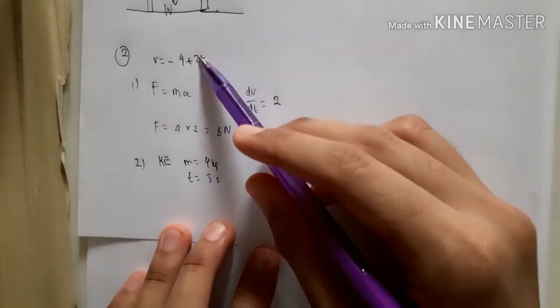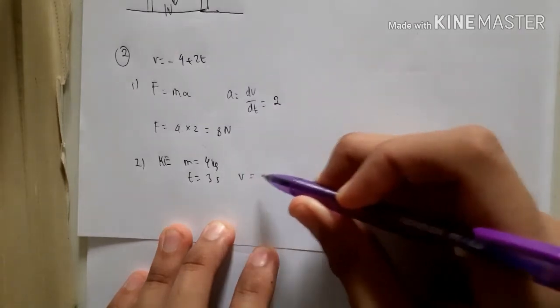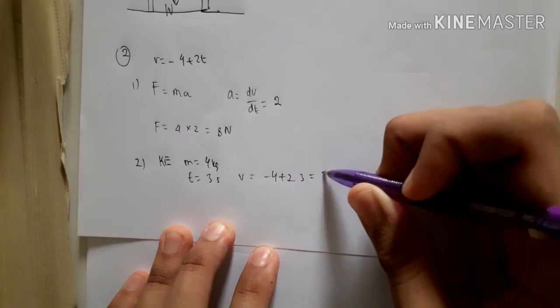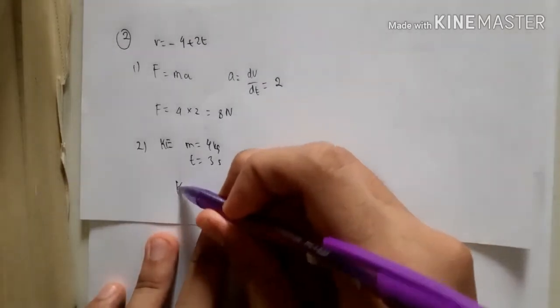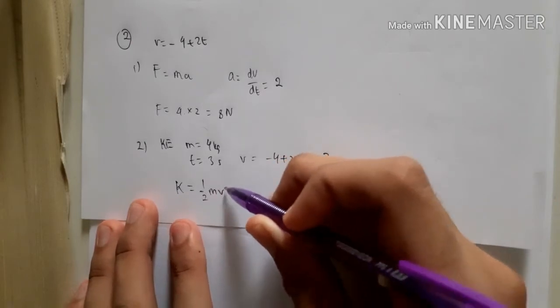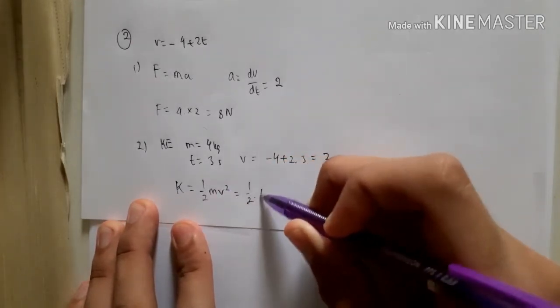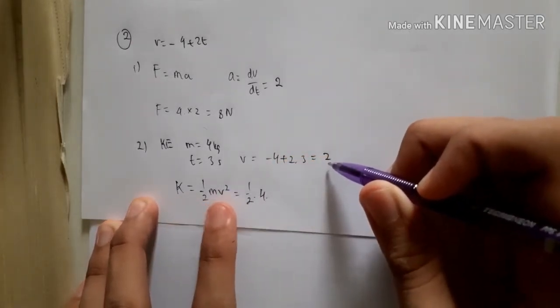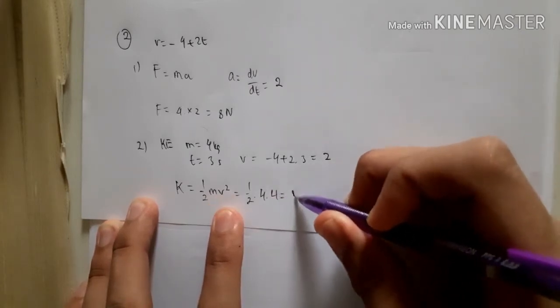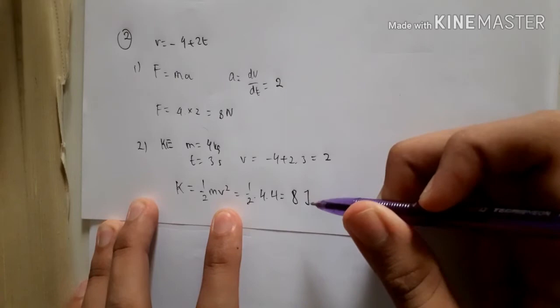So, v is minus 4 plus 2 times 3, which is 2. And the formula for the kinetic energy is half mass velocity squared. So, that is half times 4 times 4, right? 2 squared. Yeah, so this is 8 joule, okay?